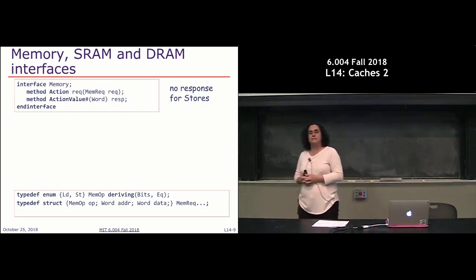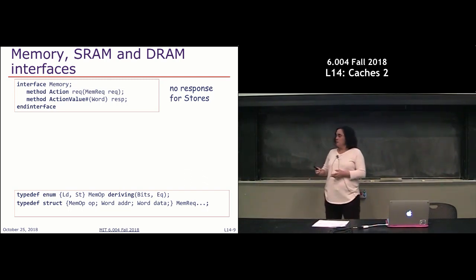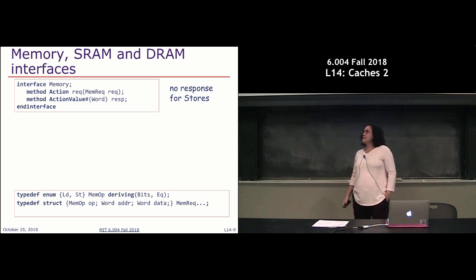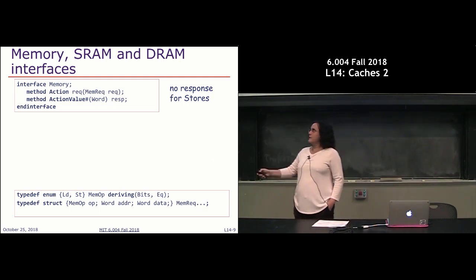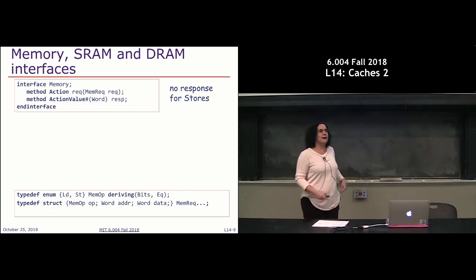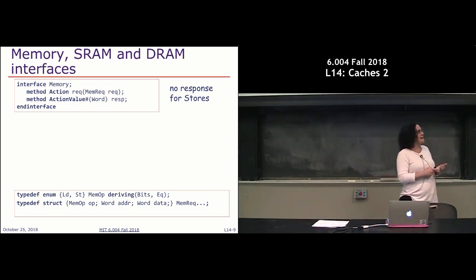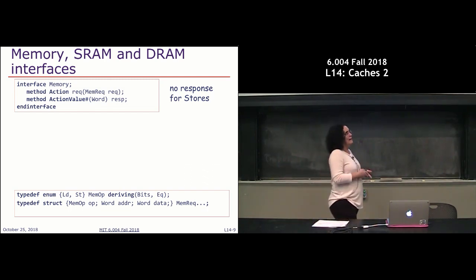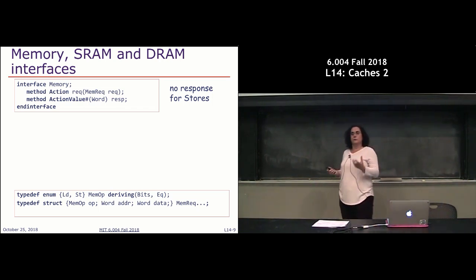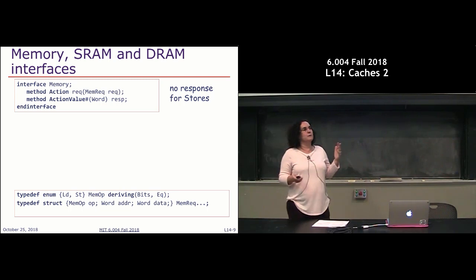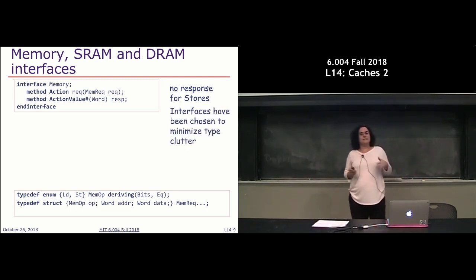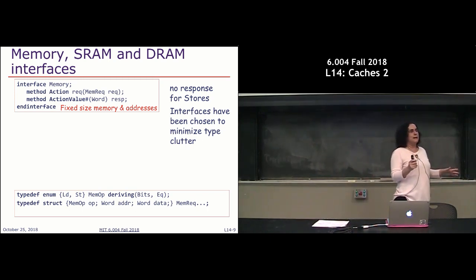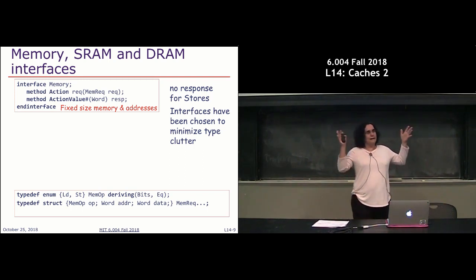Now we'll start with our memory interfaces. When accessing memory, we have two possible methods: request or response. A request consists of three pieces: the operation (load or store), the address of the location, and in the case of a store, the data to write. For the response, we always return a word. We're assuming 32-bit addresses and 32-bit words.